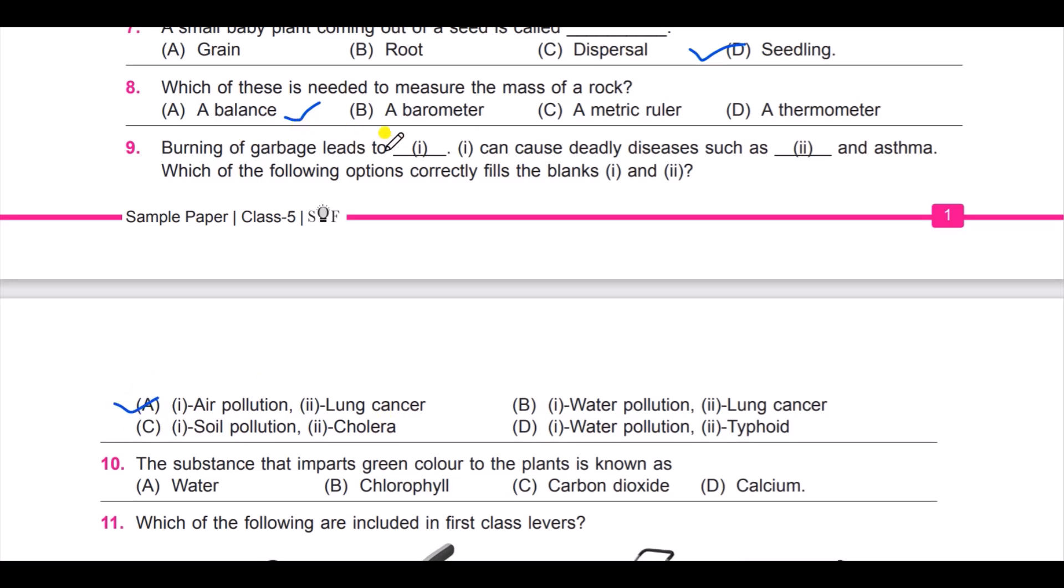C, soil pollution and cholera; and D, water pollution and typhoid. The answer is A. That is, burning of garbage leads to air pollution. It can cause deadly diseases such as lung cancer and asthma.